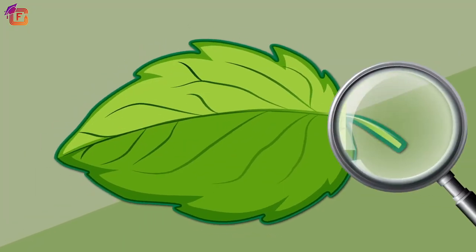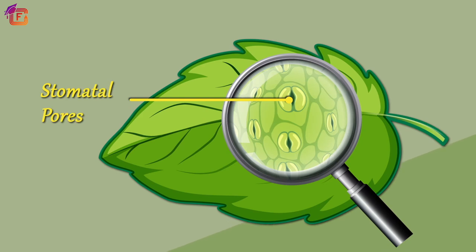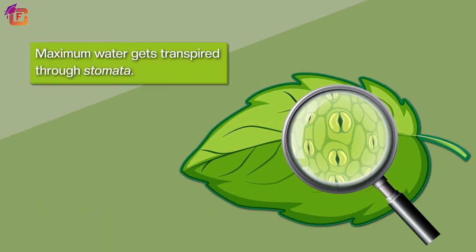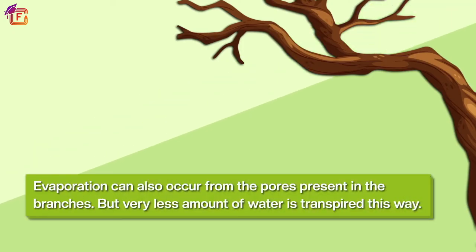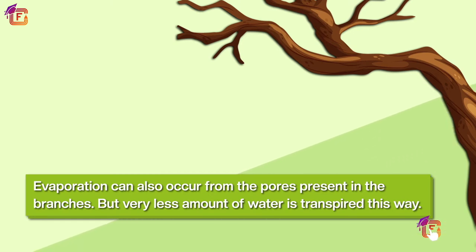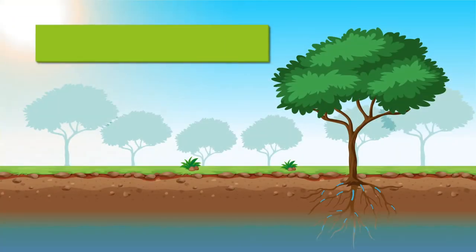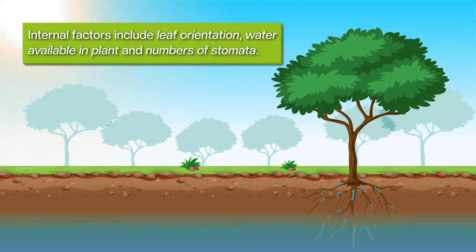When the stomatal pores present on the leaf surface are open, water is evaporated. Maximum water gets transpired through stomata. Evaporation can also occur from pores present in the branches, but very little water is transpired this way.